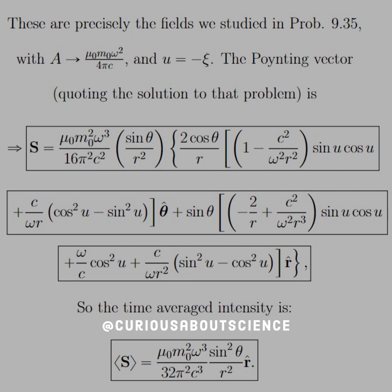These are precisely the fields we studied in problem 9.35 with A going to mu not M not omega squared over 4 pi C, U is equal to negative xi, and the pointing vector quoting the solution to that problem is given by this gross grossness that we modified. It's boxed three times because it was so long. But yes, be aware, very messy to find the E cross B for these. So if you can use a previous solution, definitely do.